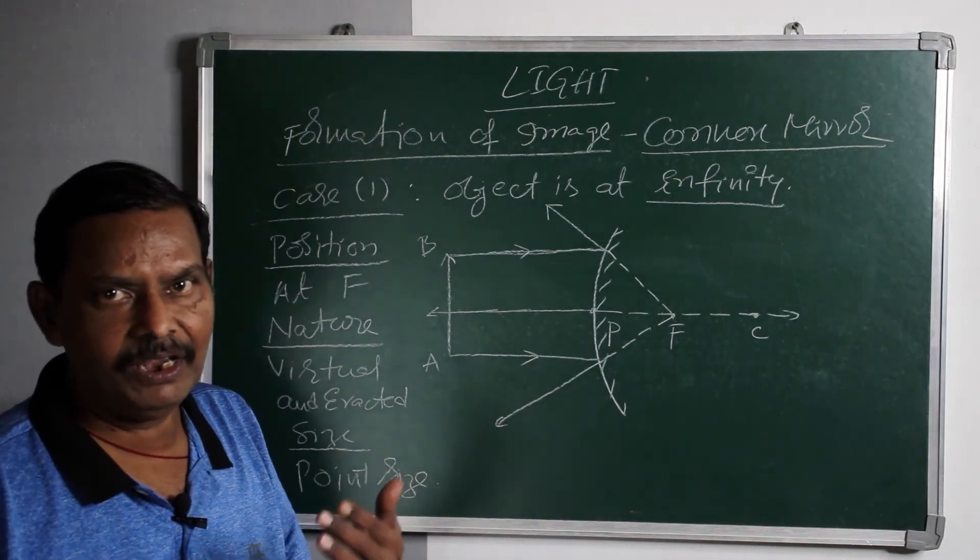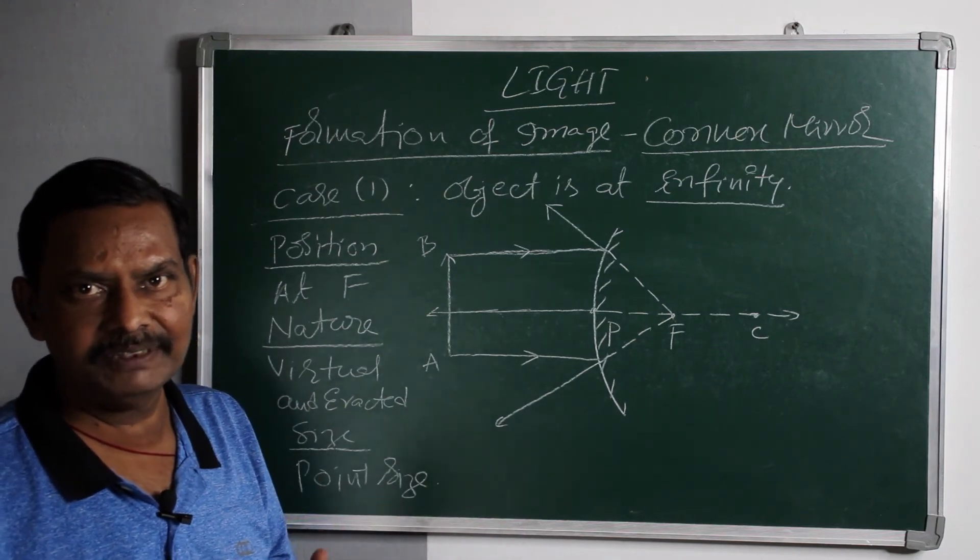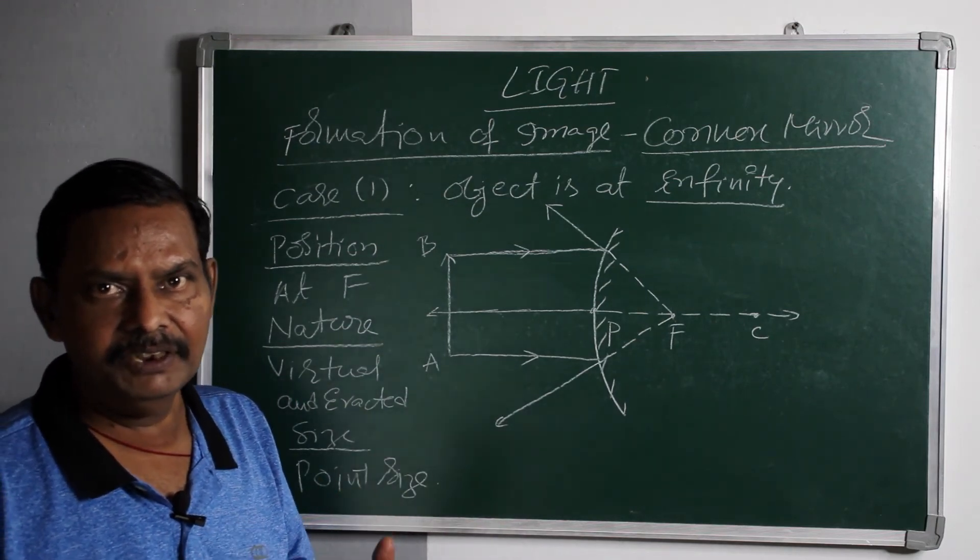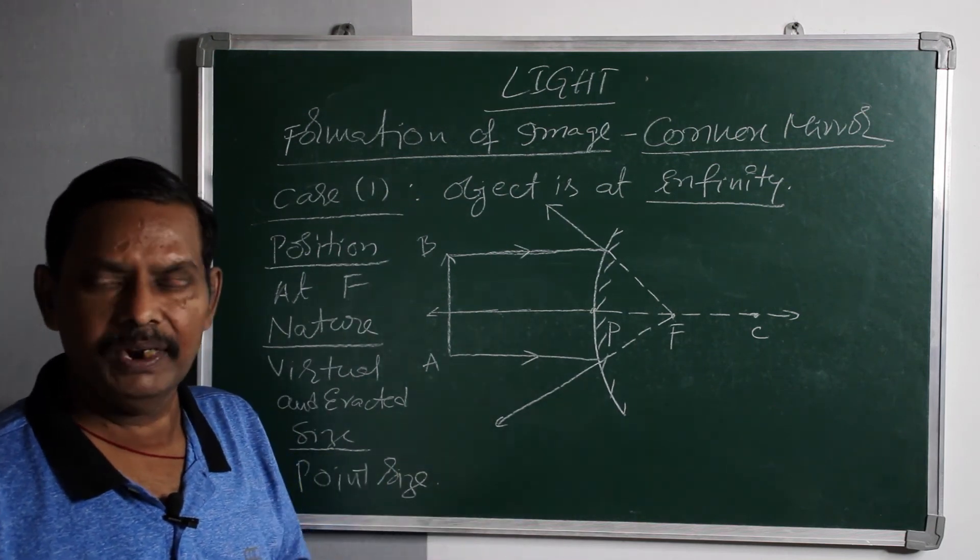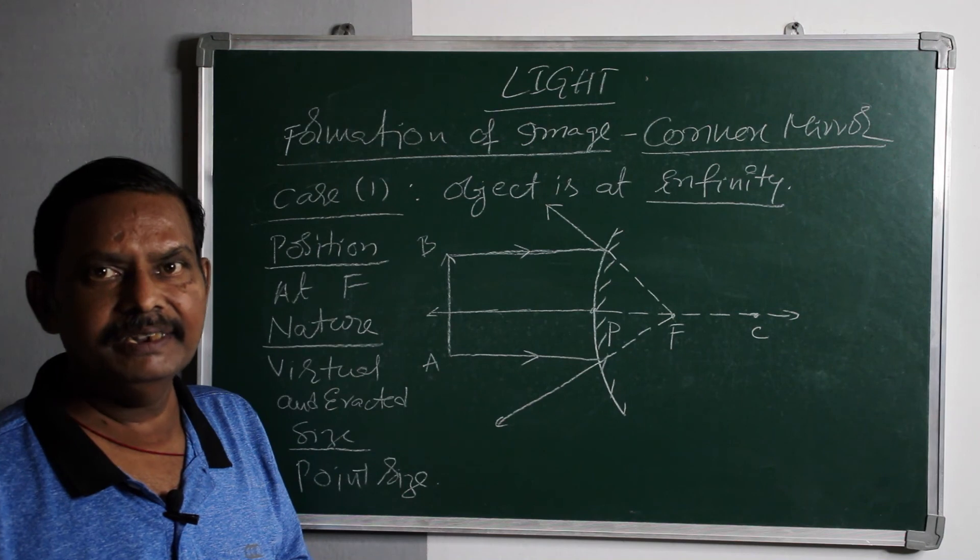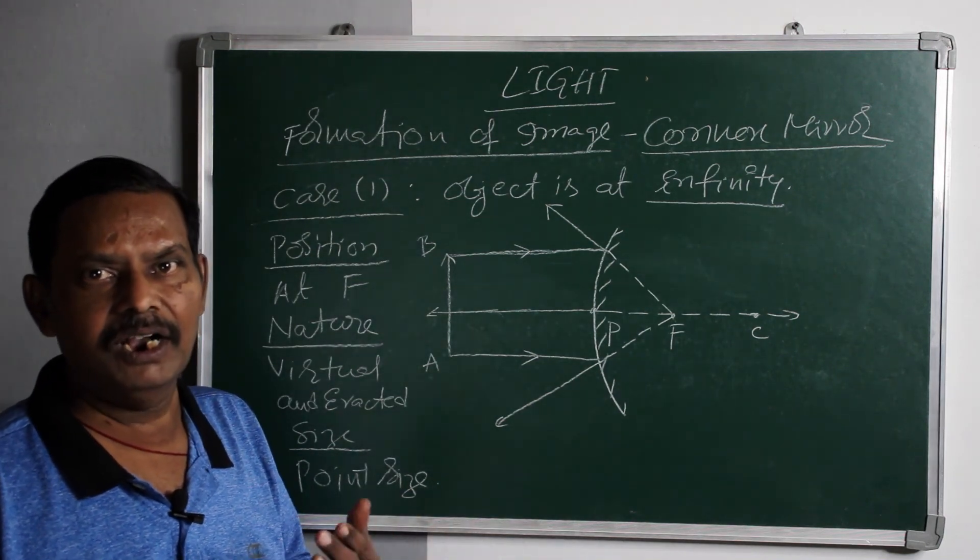So whenever an object is placed at infinity distance in front of a convex mirror, the image forms at f behind the mirror. It is virtual, erected and point size image. This is case 1 of convex mirror.